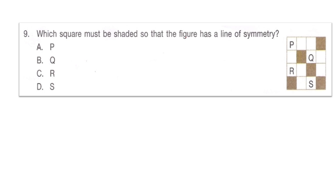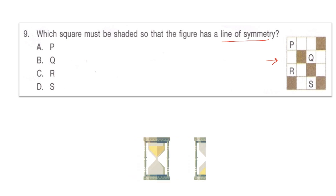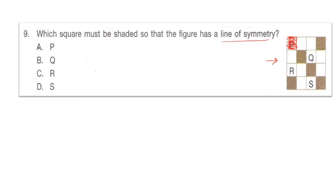Next question: which square must be shaded so that the figure has a line of symmetry? A line of symmetry means if you draw a line across the figure it should be equal on both sides. Is the right answer option A: P, option B: Q, option C: R, or option D: S? For the figure to have a line of symmetry — equal image on both sides across a line drawn vertically, horizontally, or diagonally — we should shade P. The right answer is option A: P.